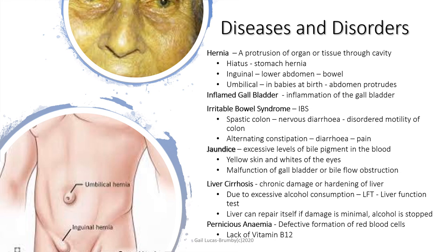Liver cirrhosis is chronic damage and hardening of the liver due to excess alcohol consumption. A liver function test — a blood test — can tell you the state of the liver. The liver can regularly repair damage if it is minimal and if alcohol is stopped. However, once there is cell death in the liver — hardening and permanent damage — it cannot repair itself.